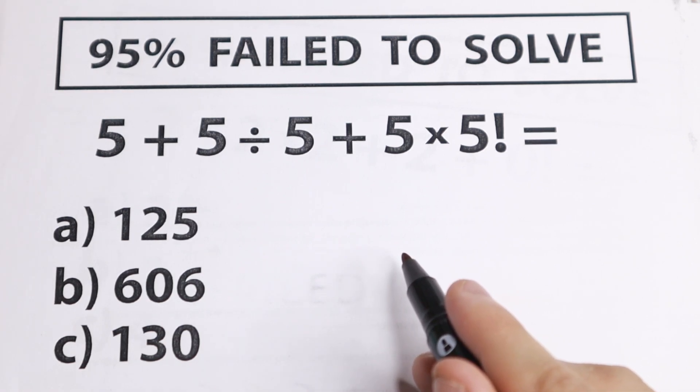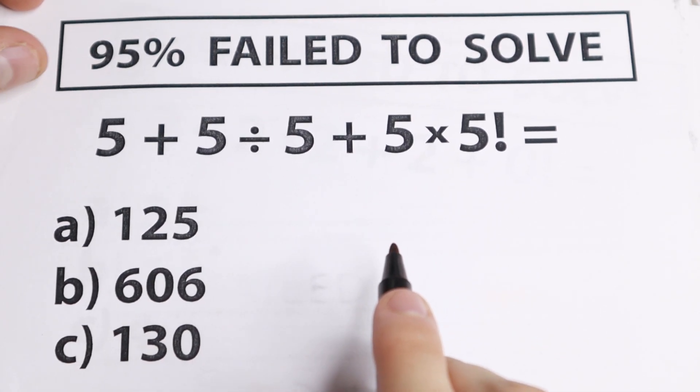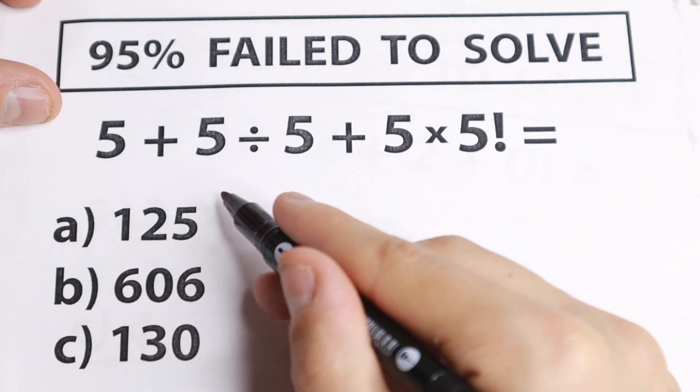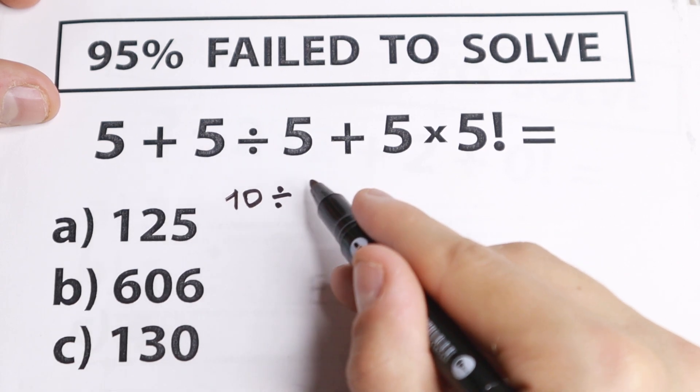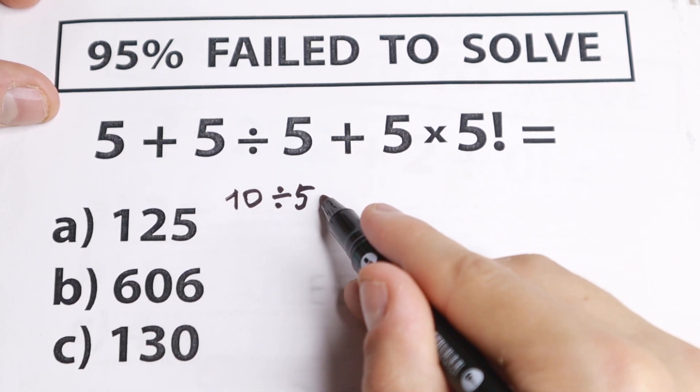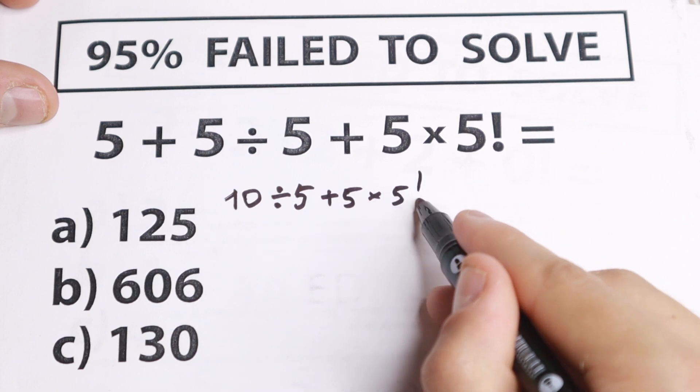And right now I want to show you a wrong way how you can solve it. This is the worst way I've ever seen because firstly we add 5 + 5. If we add it we will have 10. Then we divide it by 5. I leave it the same, and plus 5 × 5!.